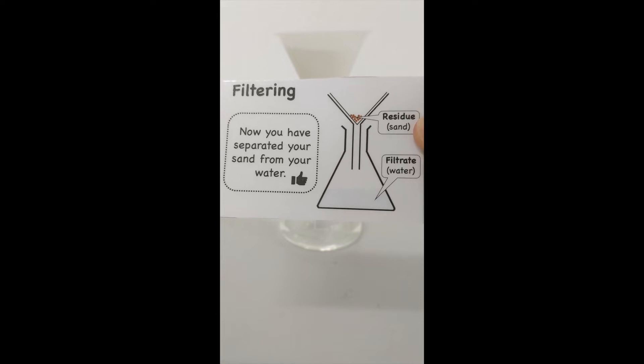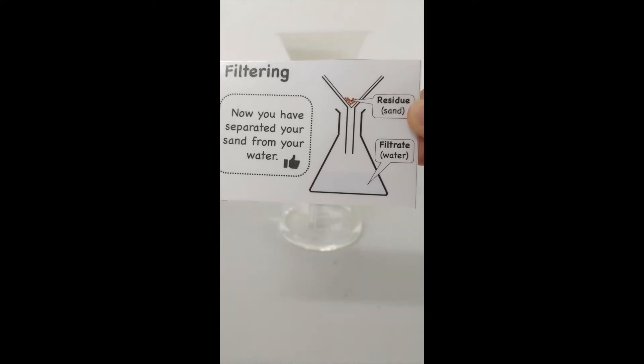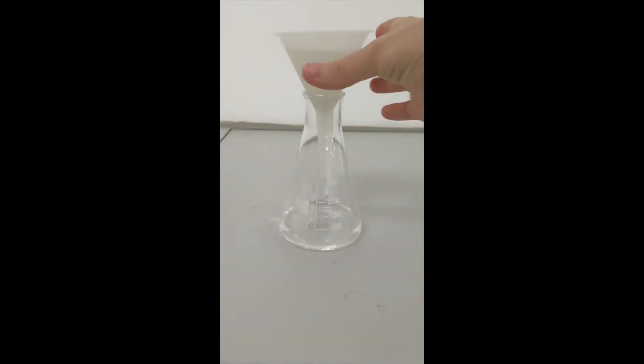Now we have separated our sand from our salt solution, our filtrate. And we're left with the residue at the top. This is the stuff that can't get through the filter paper—it's too big.